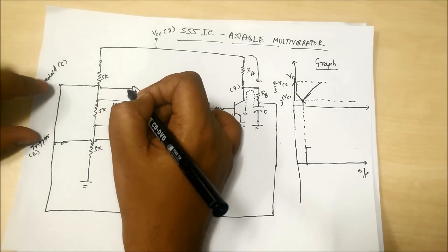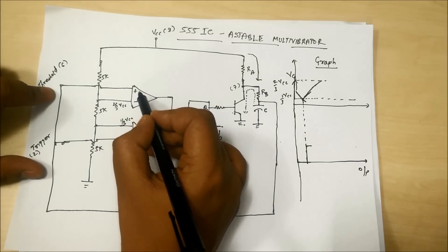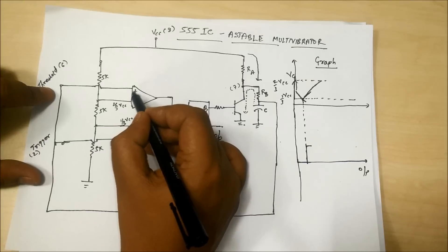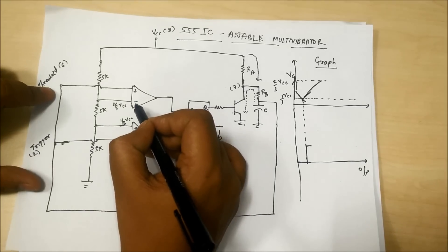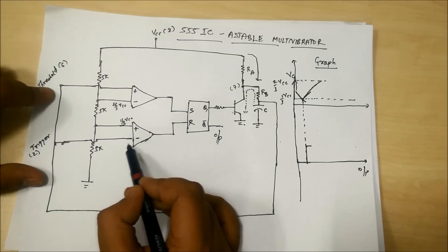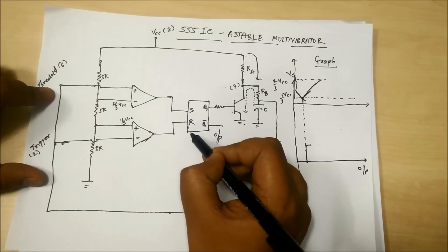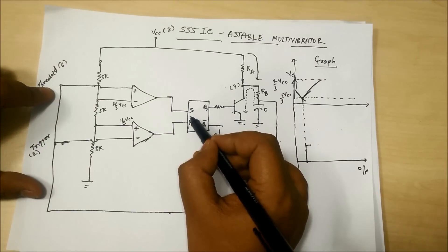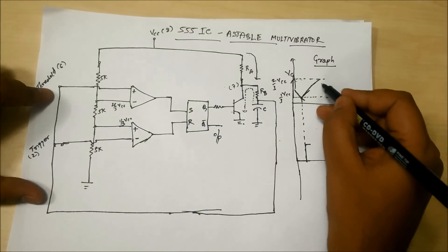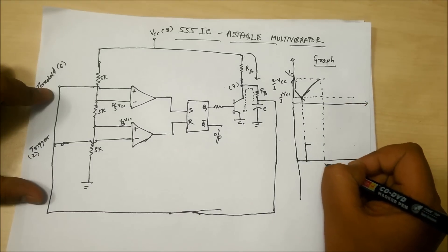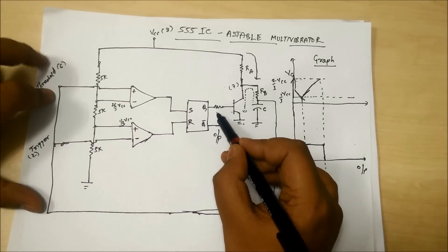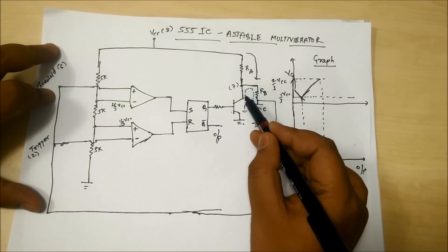When the voltage across the capacitor reaches 2/3 VCC, the non-inverting terminal of the upper comparator becomes greater than the inverting terminal, so the upper comparator produces a high output. The lower comparator has 2/3 VCC at its negative terminal making it lower, so set is high and reset is low. With set high, Q becomes high and Q-bar becomes low — output becomes low. The transistor turns on and the capacitor starts discharging through RB.